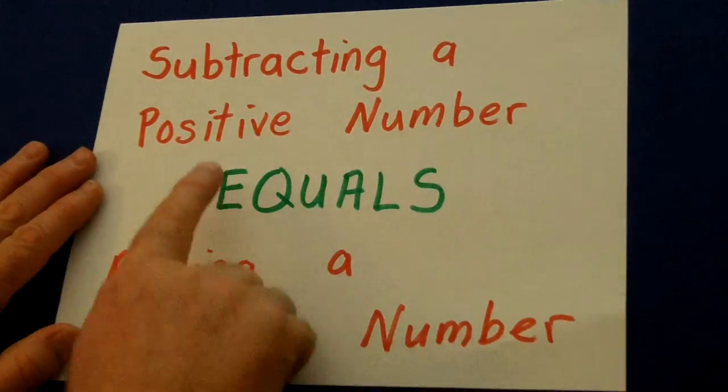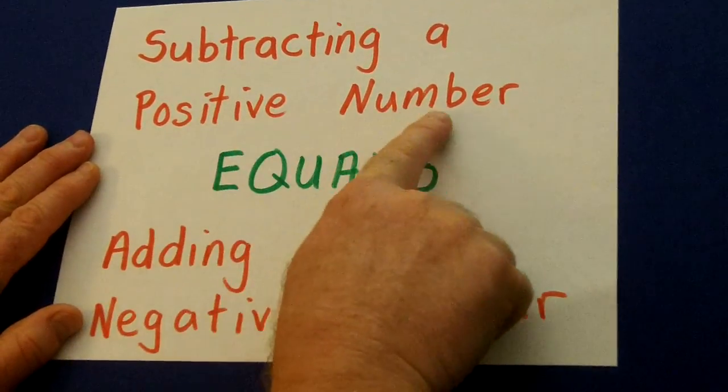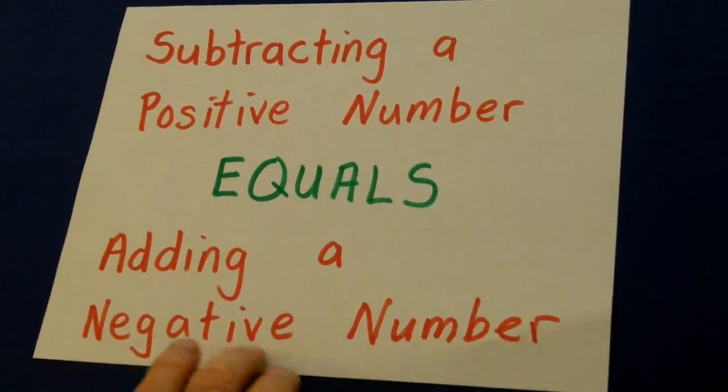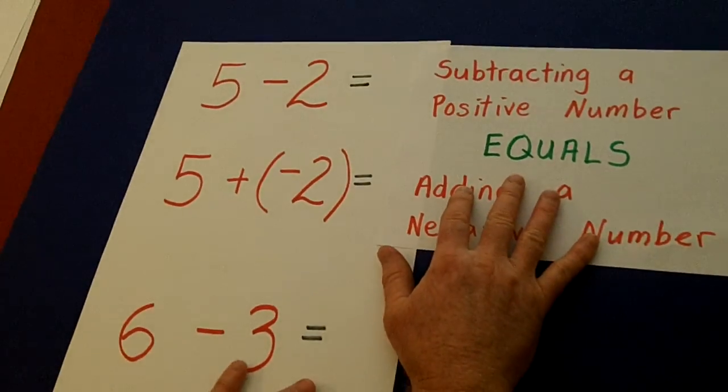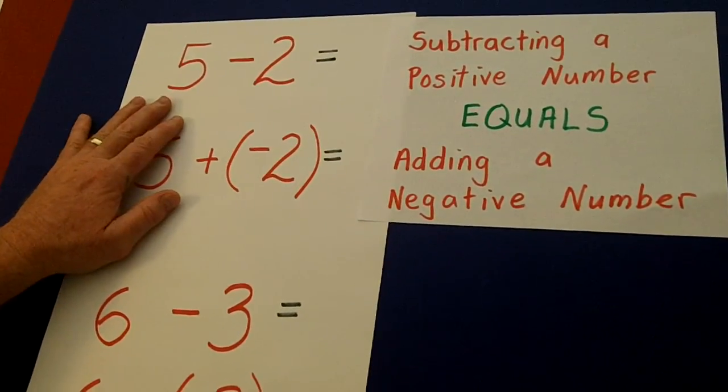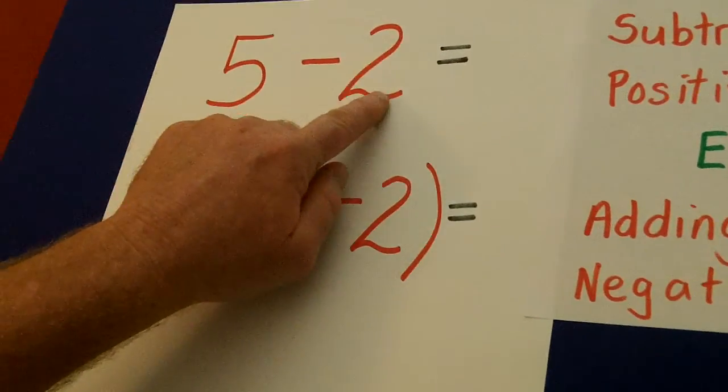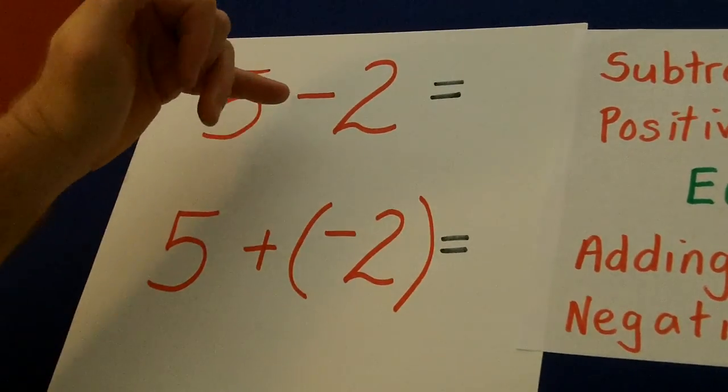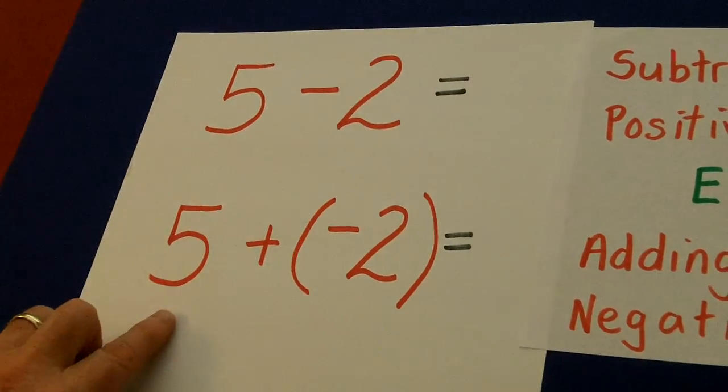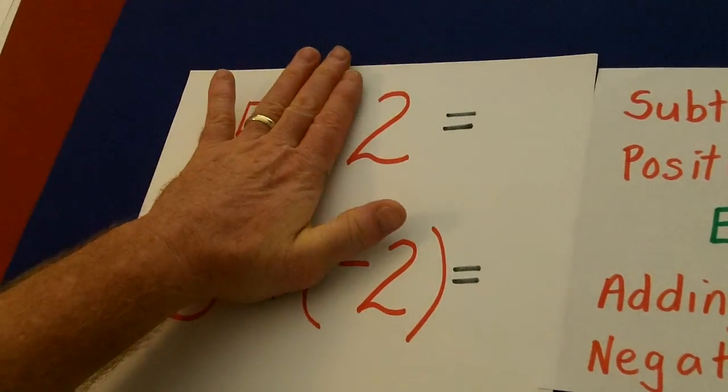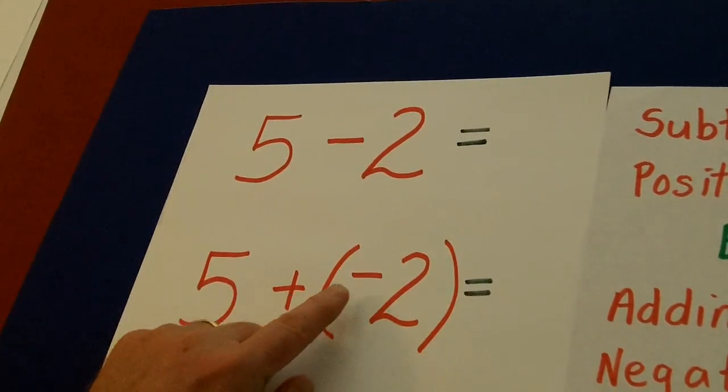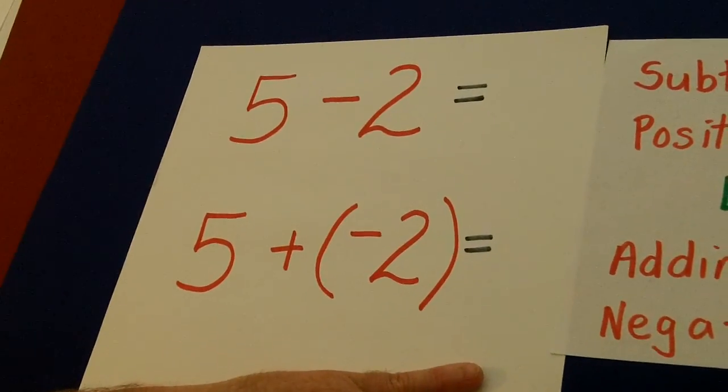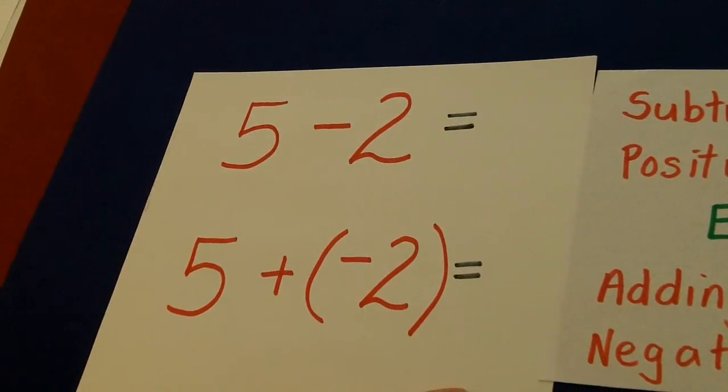Also, here's a key concept. Subtracting a positive number equals adding a negative number. Every single year, I just have lots of students who don't understand that you get the same answer with 5 minus 2. Now, this is minus a positive number. And you get the same result, 3, here as you do here. So whether it's 5 minus a positive 2, or 5 plus a negative 2, those are actually, you do those the same way and you still get 3 each time.